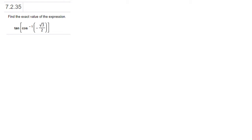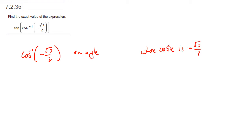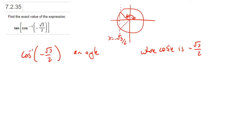So here we have arc cosine of minus root 3 over 2. This refers to an angle — leaving a blank spot — whose cosine is minus root 3 over 2. In the standard unit circle an x-coordinate of minus root 3 over 2 would be about here. We've got two possible angles: one up here in quadrant 2 and one down here in quadrant 3. Arc cosine is going to be either in quadrant 1 or quadrant 2 — that's simply how the function is defined, specifically between 0 and pi. So what's an angle between 0 and pi whose cosine is minus root 3 over 2? That would be 5 pi over 6.